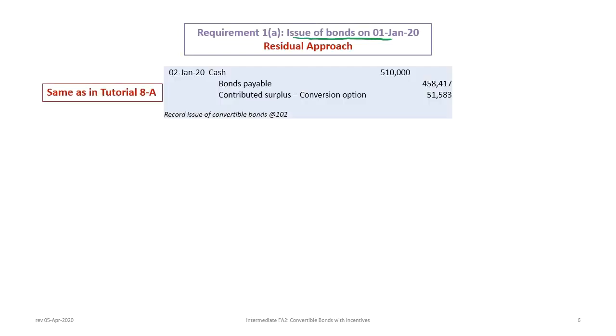The first thing to do is record the issue of the bonds on January 1st, 2020, using the residual approach. It's exactly the same as tutorial 8A. Debit cash for $510,000, credit bond payable for $458,417 (the present value without the conversion option), and then credit the contributed surplus conversion option account for the residual of $51,583.